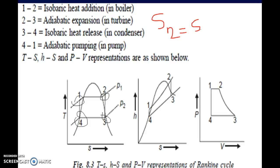s2 can be directly calculated from the steam table. For example, the question may state that steam enters the turbine at 30 bar and 400 degrees centigrade. Corresponding to these conditions, we can calculate the values of s2 and h2 from the steam table. As we can see, point 2 lies beyond the saturation curve — it is superheated steam — and the enthalpy of superheated steam can thus be calculated.